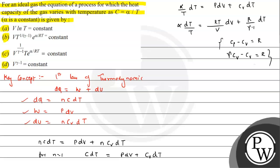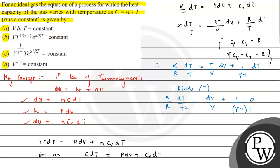We now have the expression in terms of V and T. Dividing through, we get (α/R)·(dT/T) = (dV/V) + (1/(γ-1))·dT. Dividing the entire equation by T gives (α/R)·(dT/T²) = dV/V + (1/(γ-1))·(dT/T). Now we are ready to integrate both sides.